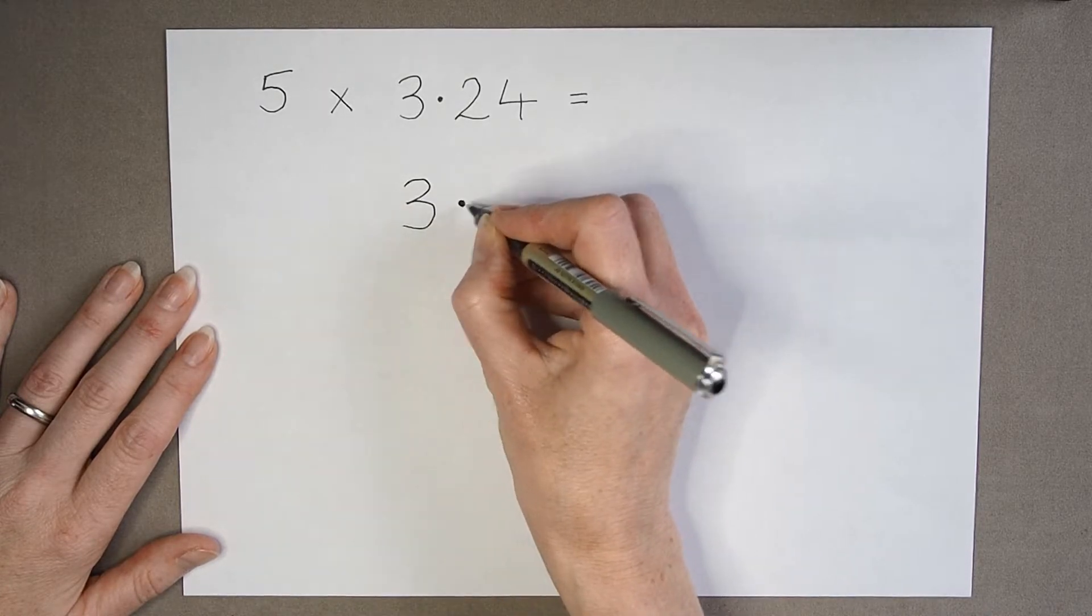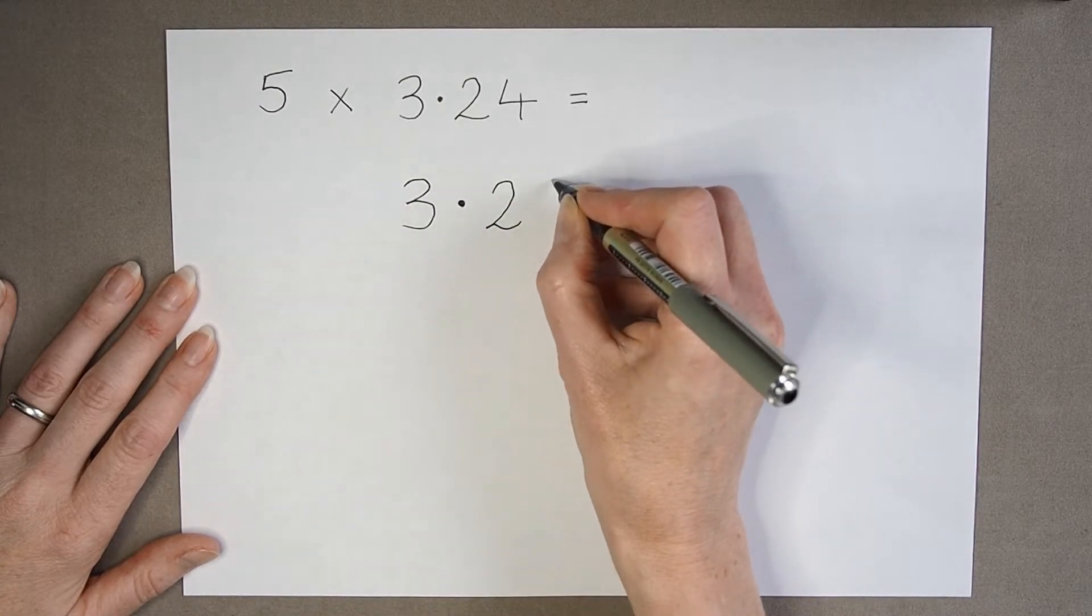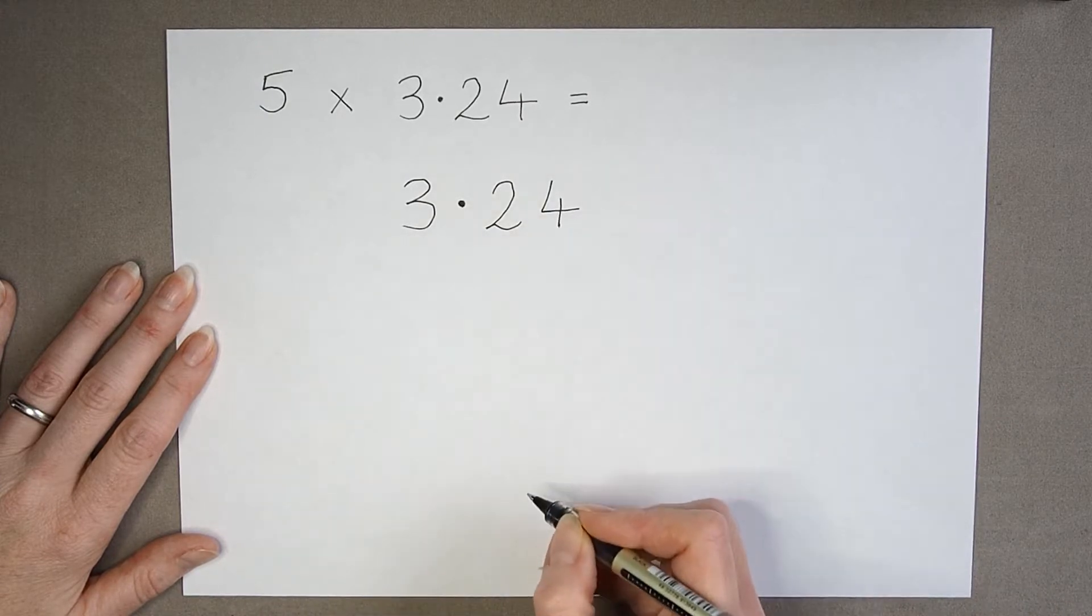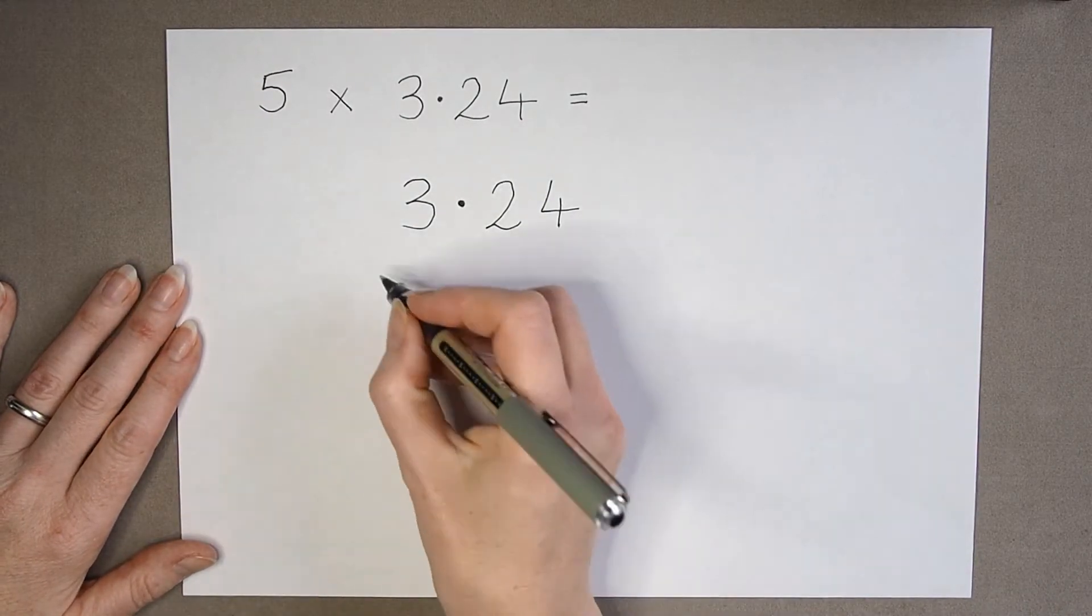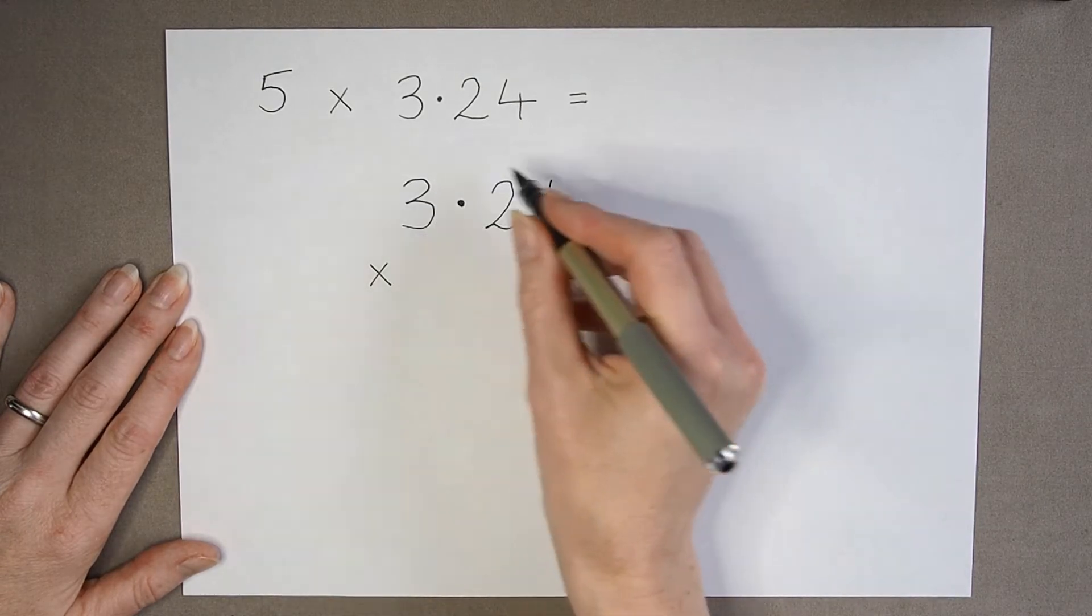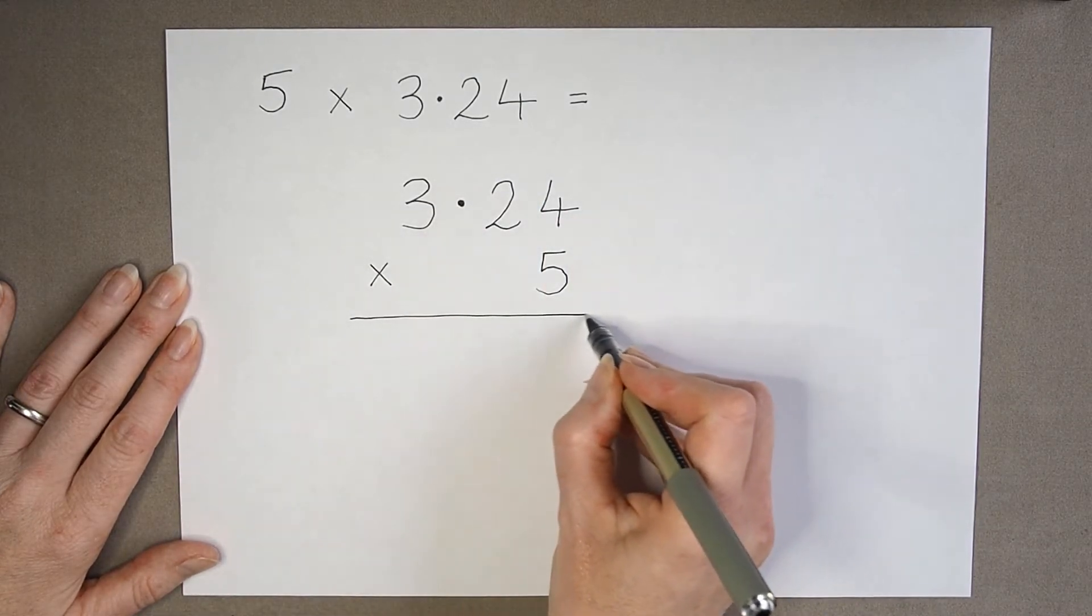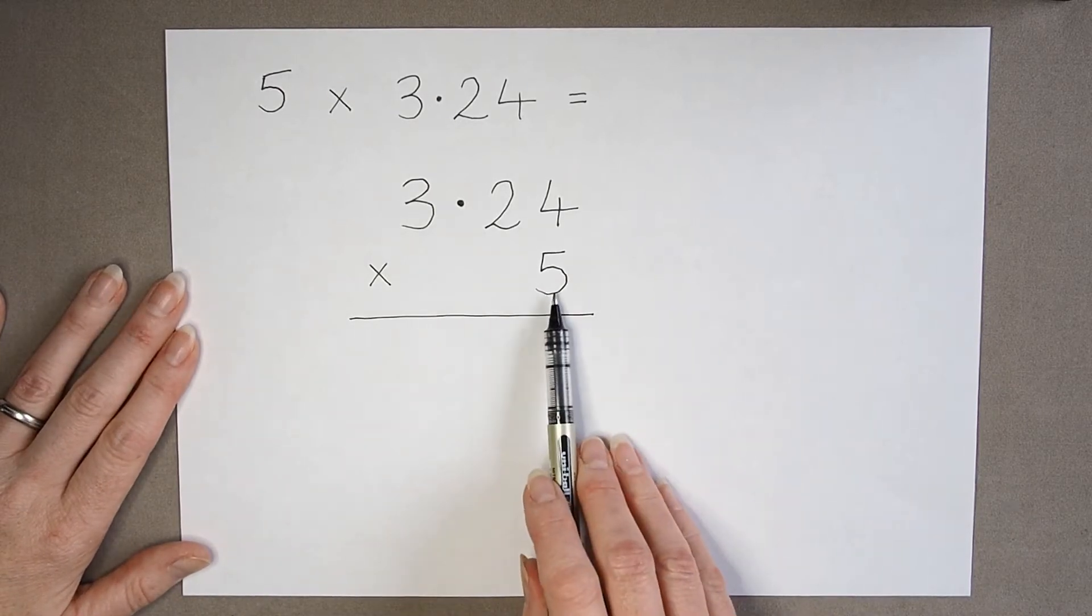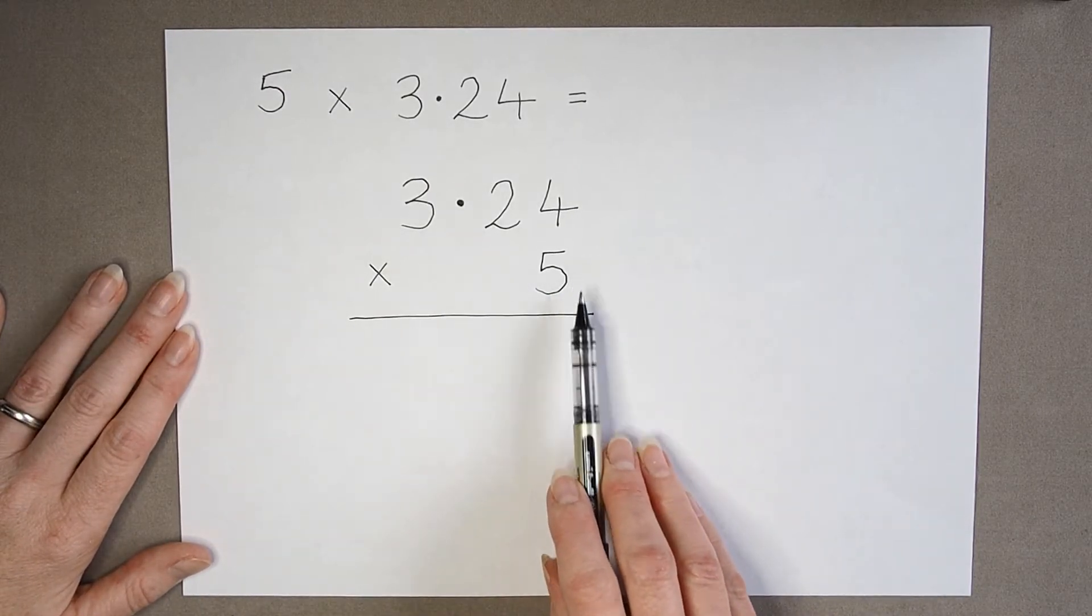3.24. And I'm going to multiply by 5. So again, I'm keeping the same look for my column method, where this single digit is right over on the right-hand side.